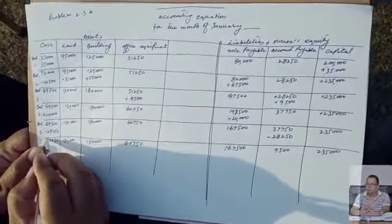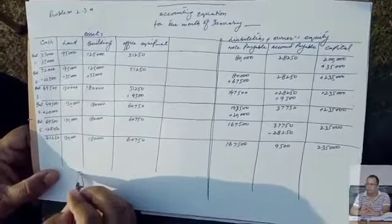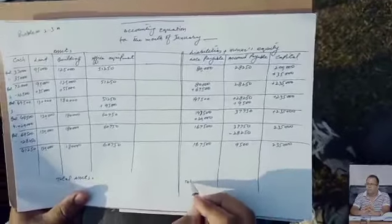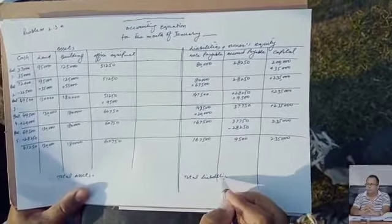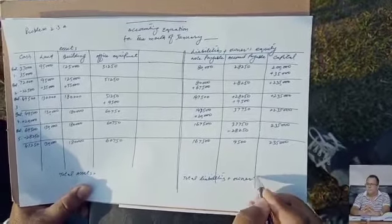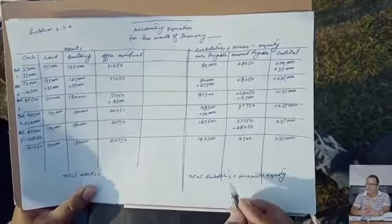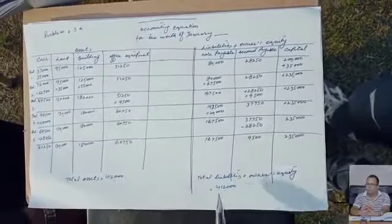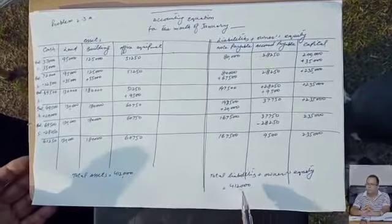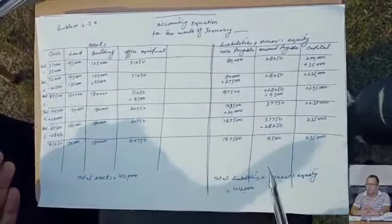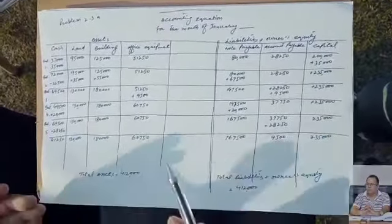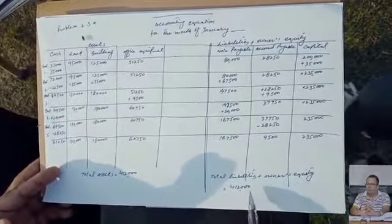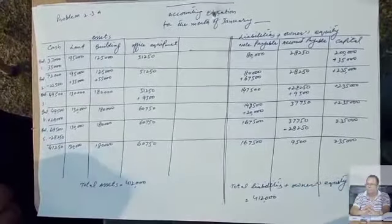Now add all the assets to get total assets, and add all the liabilities — that will be the total liabilities plus owner's equity. The two sides must be equal. The accounting equation states that the left-hand side, meaning the asset side, must be equal to liabilities plus owner's equity. Every step, if you want to test any step, you will have the two sides equal. This is basically the way to solve this problem. Thank you.